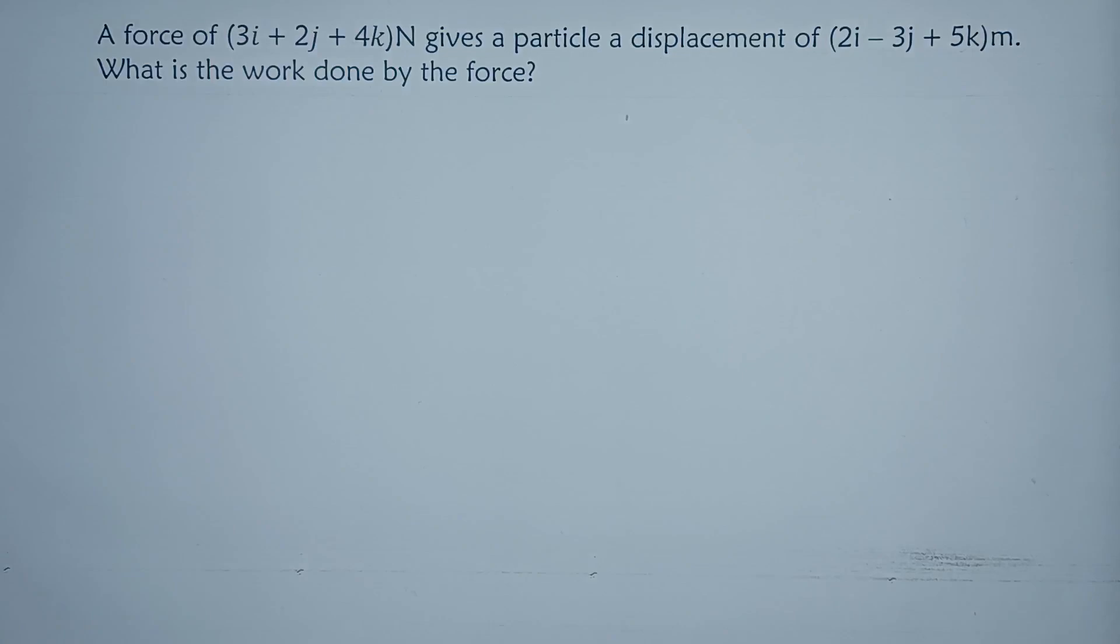A force of 3i plus 2j plus 4k in newtons gives a particle a displacement of 2i minus 3j plus 5k in meters. We're working to find the work done.